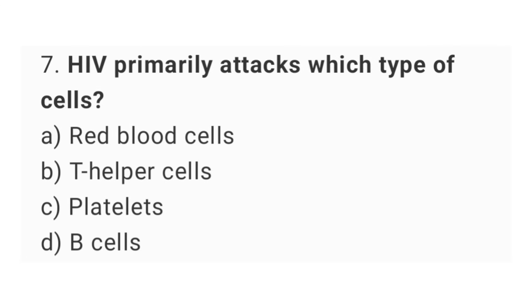Question number seven: HIV primarily attacks which type of cells? The right answer is option B, T helper cells.